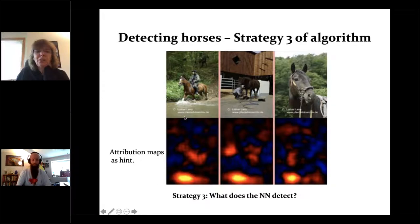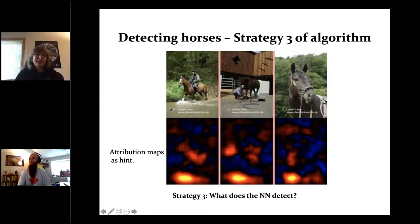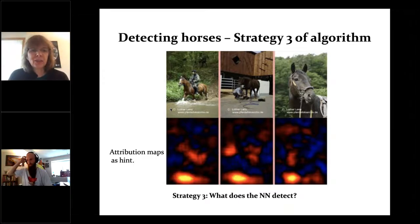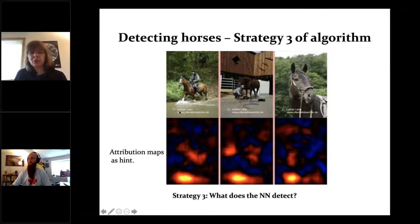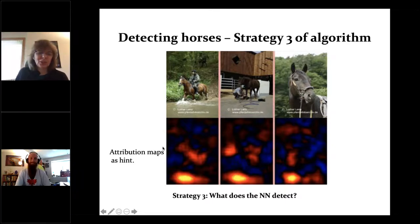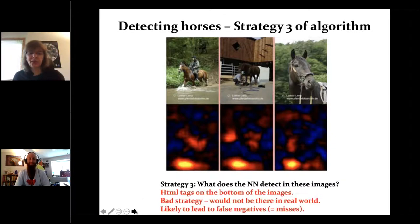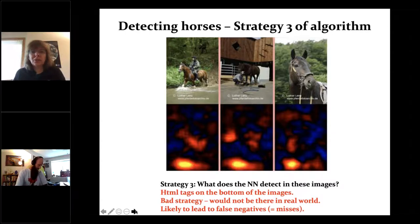A third strategy is even more interesting. The attribution maps point to the bottom left of each image — the copyright notice. The people who constructed the database had used one specific database for horses that had an HTML tag and copyright notice at the bottom. The neural network figured out that whenever that specific copyright notice appeared, there was a horse in the image — another faulty strategy that would lead to many misses in the real world, since real images won't have that HTML tag.